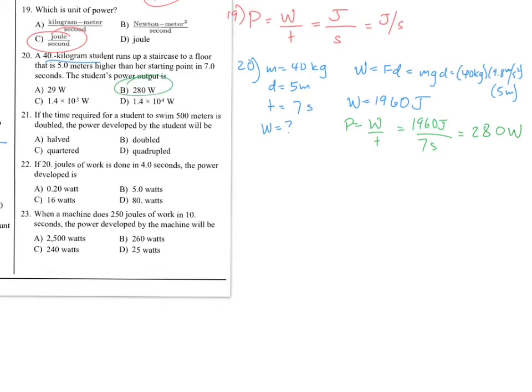Okay. Number 21. Okay, look at here. It's a swimming question. Awesome. Alright. If the time required for a student to swim 500 meters is doubled 500 meters is rather a mid-distance event. Not really my specialty. The most I've swam actually is a 400 meter race. Anything past 200 is actually pretty grueling, but I digress.